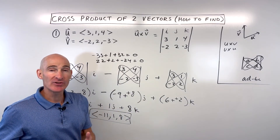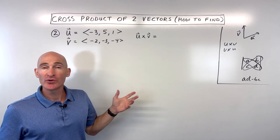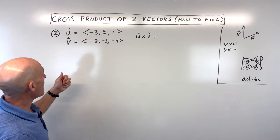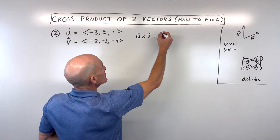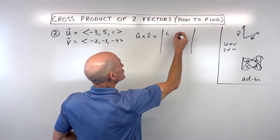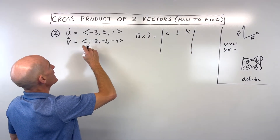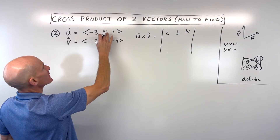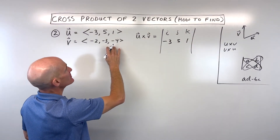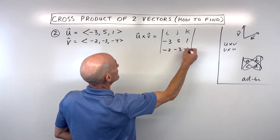Let's take a look at another example — see if you can do this one on your own. Go ahead and pause the video and try number two. So if I was going to do this problem, I would set it up like we did the last one: make a matrix, put the standard unit vectors i, j, and k up at the top, and then for u cross v put vector u first — negative three, five, and one — and vector v the second vector on the bottom: negative two, negative three, negative four.